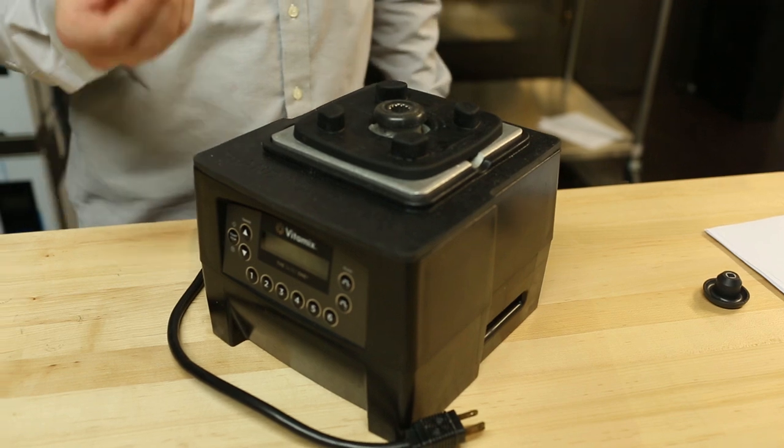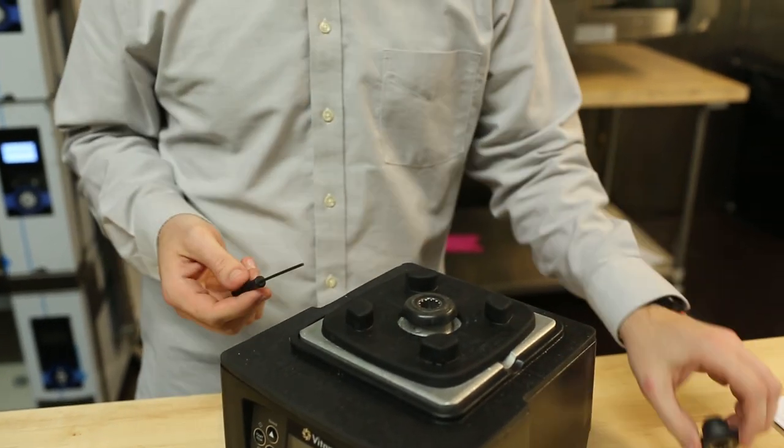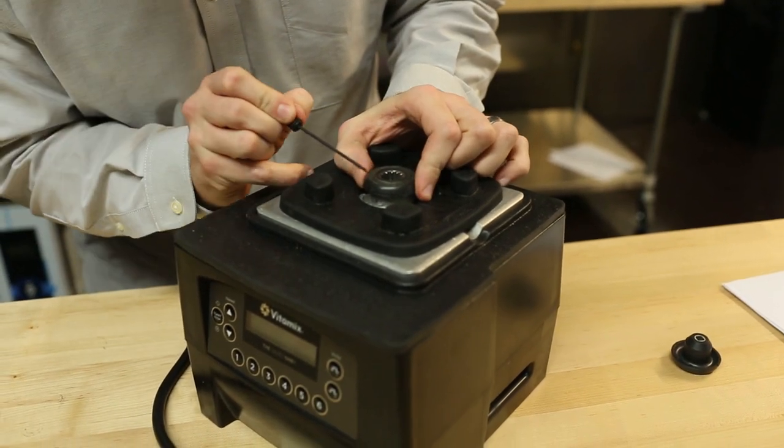First thing, you get your hex wrench, which comes with your replacement drive socket, and you want to line up. There's an arrow right here.